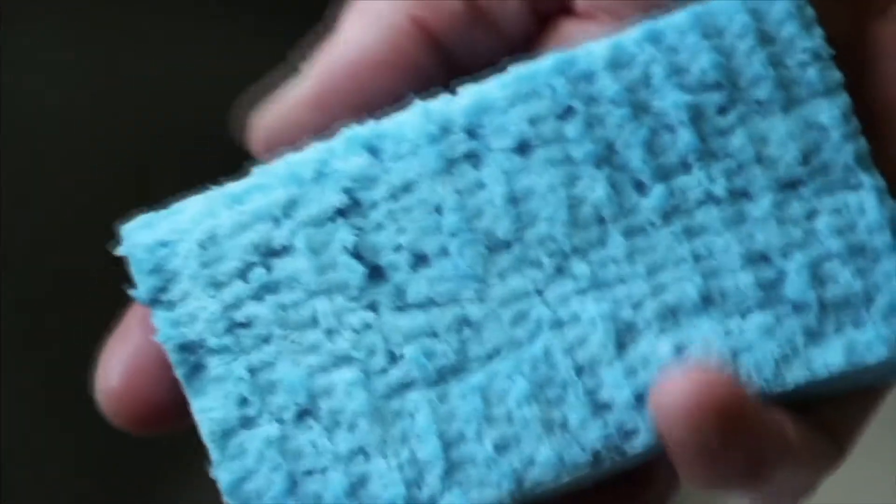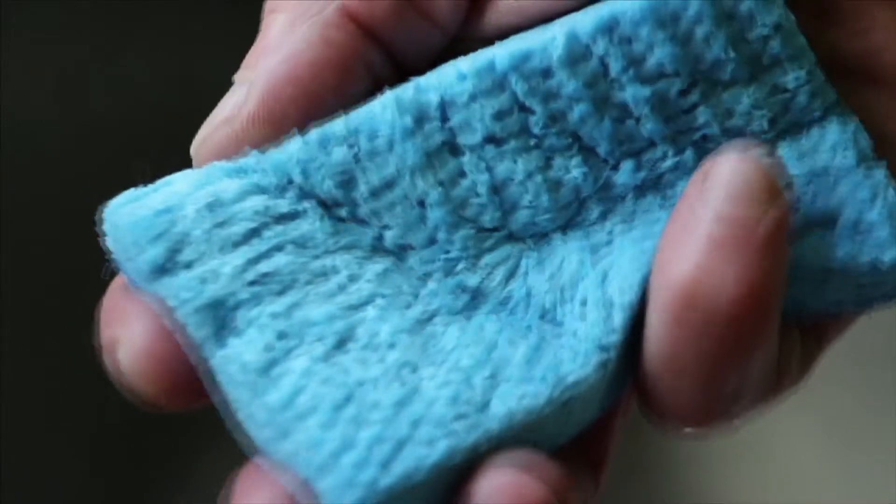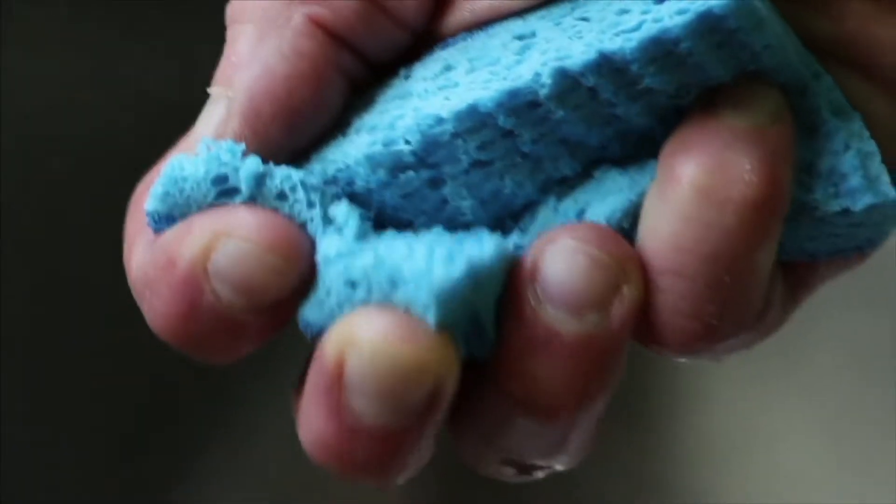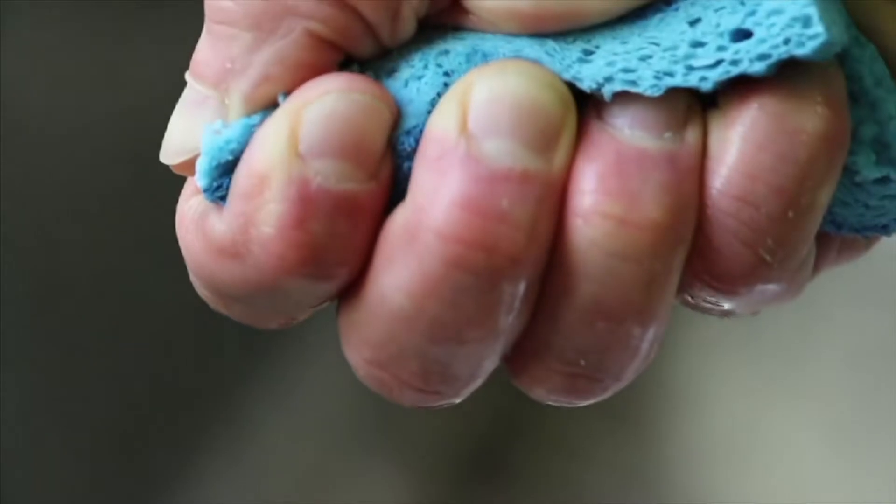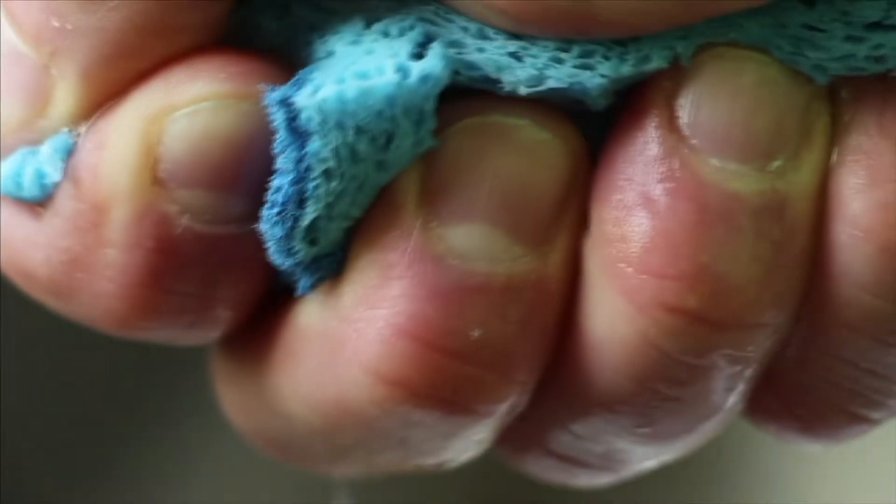Imagine taking a large sponge and squishing it into a tiny ball in your hand. That squished up, densely packed sponge is like a black hole. If you make something smaller by squishing it, its gravity gets stronger.